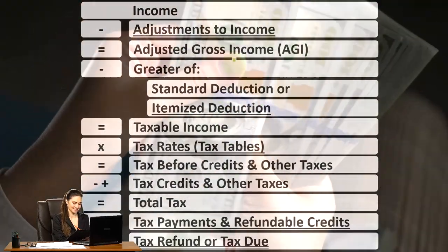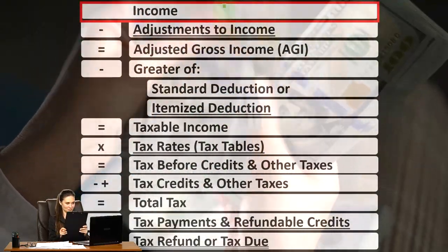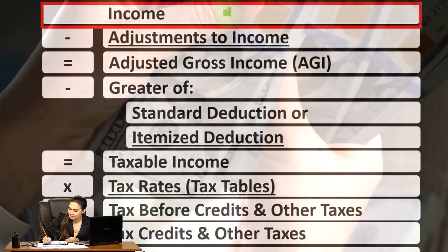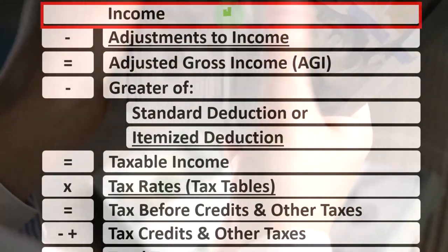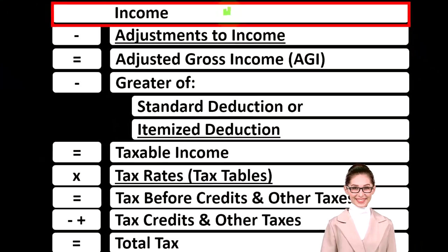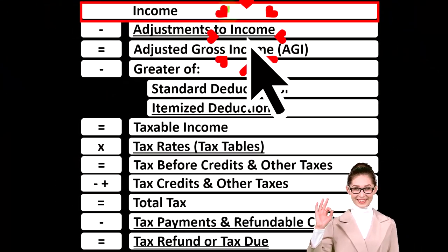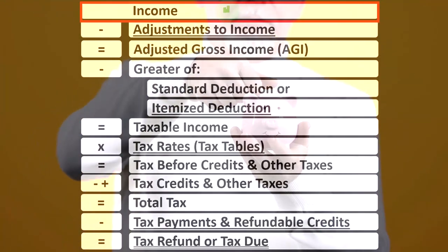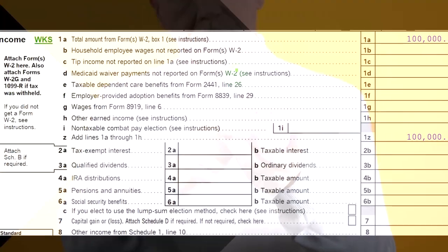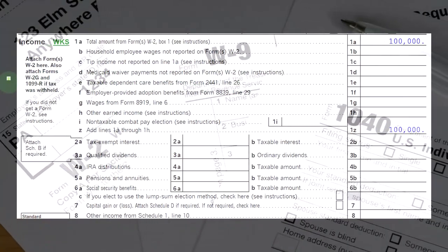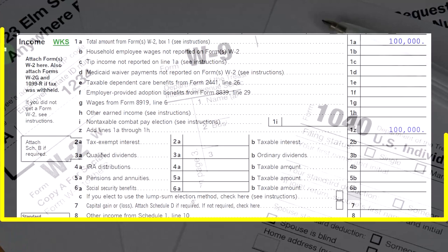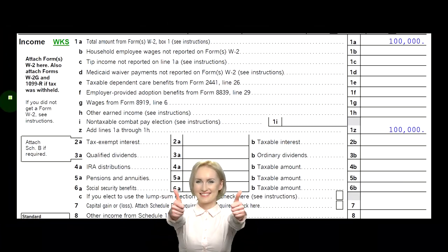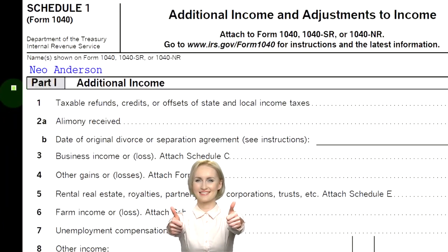When looking at the income tax formula, we're focused on line one — income — remembering that this single line might be comprised of many different types of income, coming from different forms and schedules feeding into this income line item. We're going to be focused here on some of the major forms of income, including W-2 employment income. This is the first page of Form 1040, where much of the income lines are represented, possibly being pulled from other schedules as well.